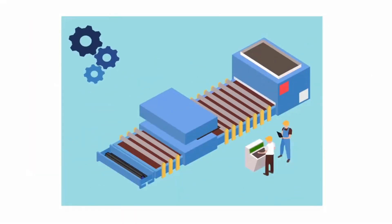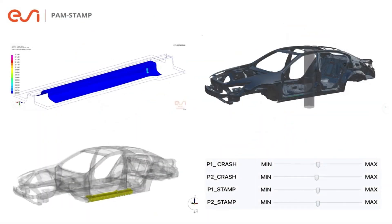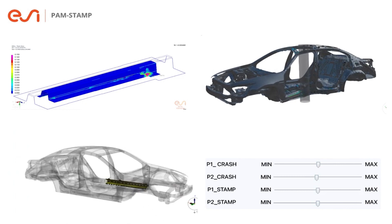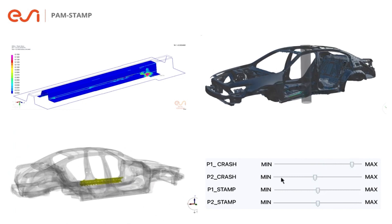Once the body in white is optimally designed, the next step is to define the manufacturing process. Complex manufacturing processes induce variability, which impacts the final safety. ESI supports a holistic vision of engineering, where our software takes into account the impact of manufacturing processes on product performance.